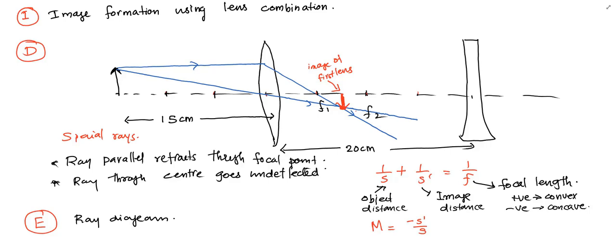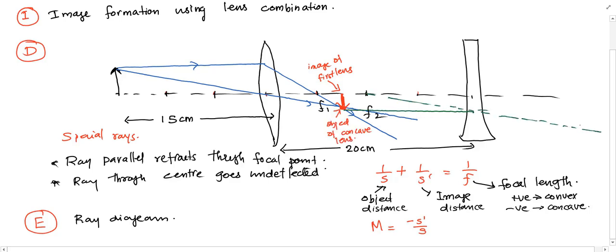As it is a diverging lens, a ray going parallel to the lens axis will appear to be coming from the focal point. A ray going through the center of the lens goes undeflected. These rays don't converge after refraction through the lens, so we need to back trace the rays to see where exactly they meet to form the virtual image.